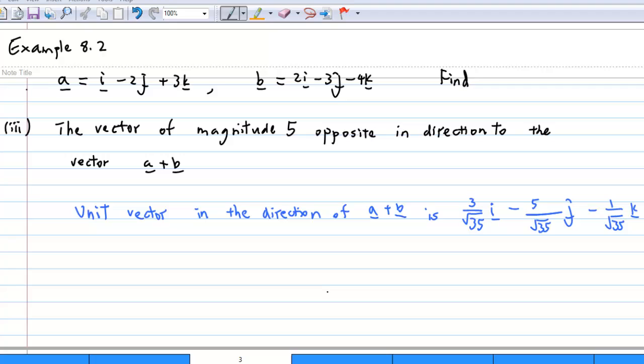In the earlier calculation, we find that the unit vector in the direction of a plus b is 3 over square root 35 i minus 5 over square root 35 j minus 1 over square root 35 k.